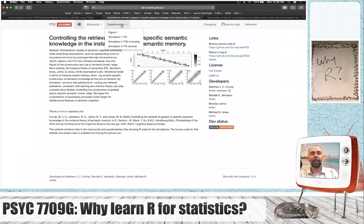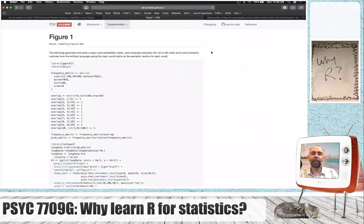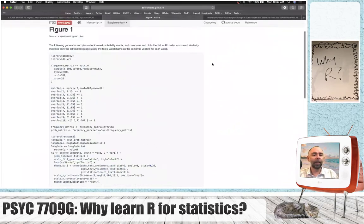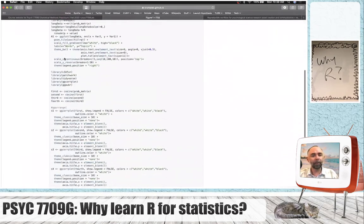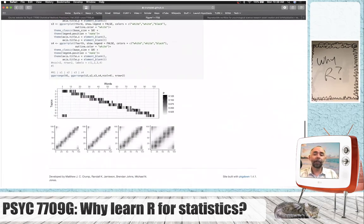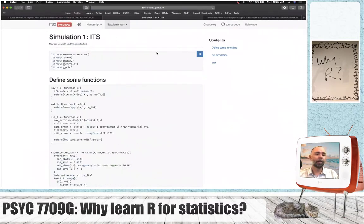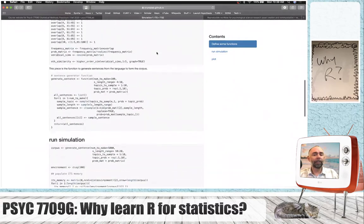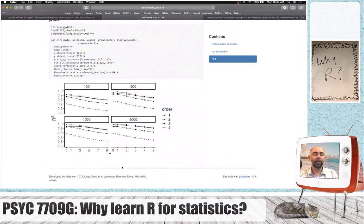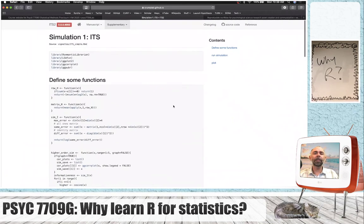And one neat thing, this is kind of where I was headed, is we can look at some of the R code that I used to do everything in the paper. So this particular piece of R code generates this figure. This R code does the first simulation and generates this figure. These are examples of what we'll call reproducible research.